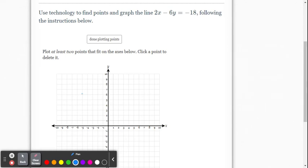Let's look at another one. We have 2x minus 6y equals negative 18. So again, we want to isolate y on one side. So let's subtract 2x from both sides of the equation. So then we have, be careful here, it's negative 6y.